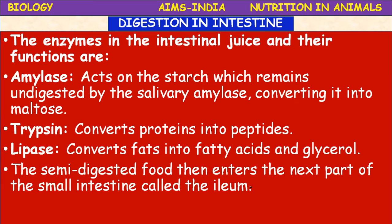The bicarbonate salts present in the pancreatic juice neutralize the HCl, making the medium slightly basic. This is because different enzymes require different pH levels — for example, pepsin requires an acidic medium to show its action. The remaining enzymes require a basic medium, so salts are added. This is the naturally designed biological system in the body. The semi-digested food then enters the next part of the small intestine.